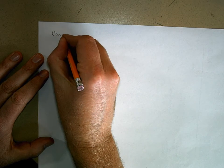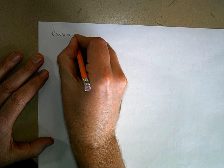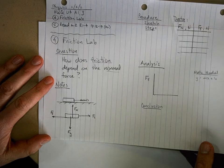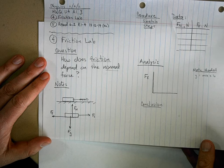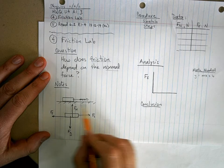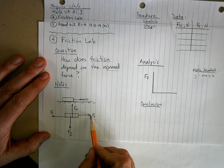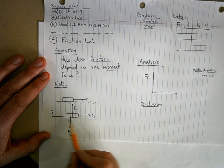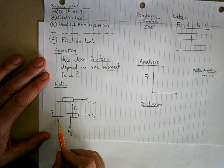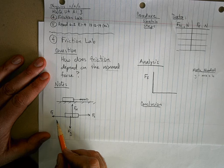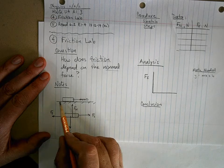Let's do consensus on the friction lab. We wanted to answer the question: how does friction depend on the normal force? What we did is we took a book and dragged it across the table. Half of you measured the force it took before the book started moving — that is the maximum force of static friction — and the rest of you pulled it and let it drag across the table at a constant velocity.